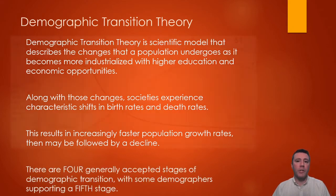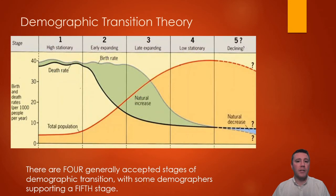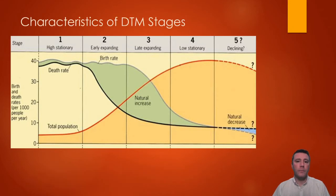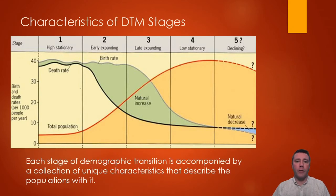The demographic transition model contains four generally accepted stages, but with increasing regularity, a fifth stage is often included. Each of the stages of demographic transition has a set of characteristics that help define it.